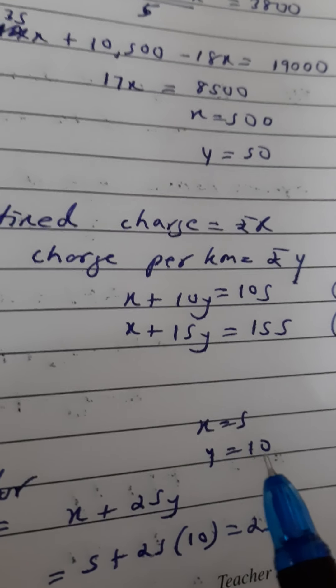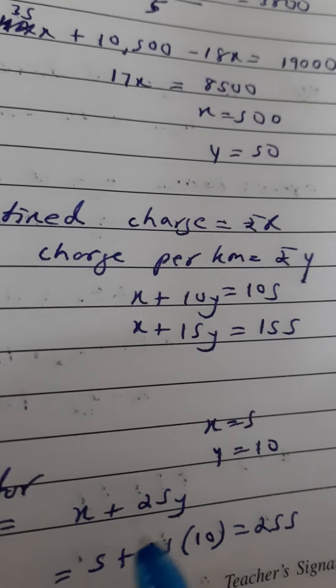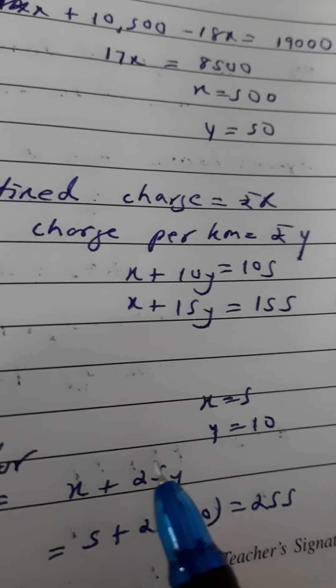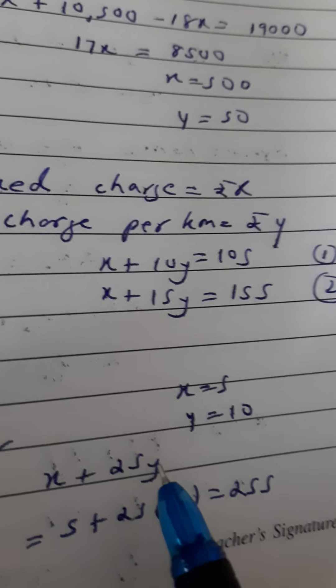Then they have asked what will be the charges for traveling 25 kilometers. If he wants to travel 25 kilometers, he has to pay x plus 25y because fixed charge plus the charge per kilometer is y. So 25 kilometers will be 25y.